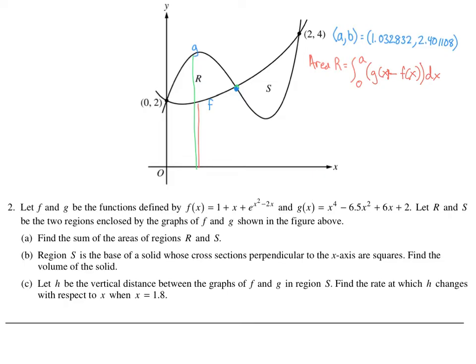The area of S would be very similar, except this one goes from a (1.032) to 2. On this one, you have to think through what's your high and your low again. You've got to be very careful here, because f is now on top and g is now on bottom. So the interval is from a to 2, and the area of S is the integral from a to 2 of f(x) minus g(x) dx.